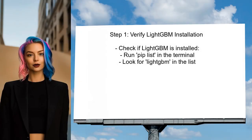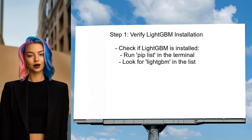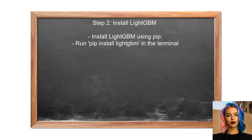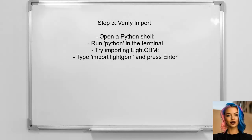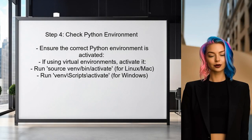To resolve the import error for LightGBM, first ensure that LightGBM is installed correctly by checking if the installation was successful. If LightGBM is not listed, you need to install it using pip, which is the package installer for Python. After installation, verify that it was successful by trying to import LightGBM in a Python shell or script. If the import works without errors, you've successfully installed LightGBM.